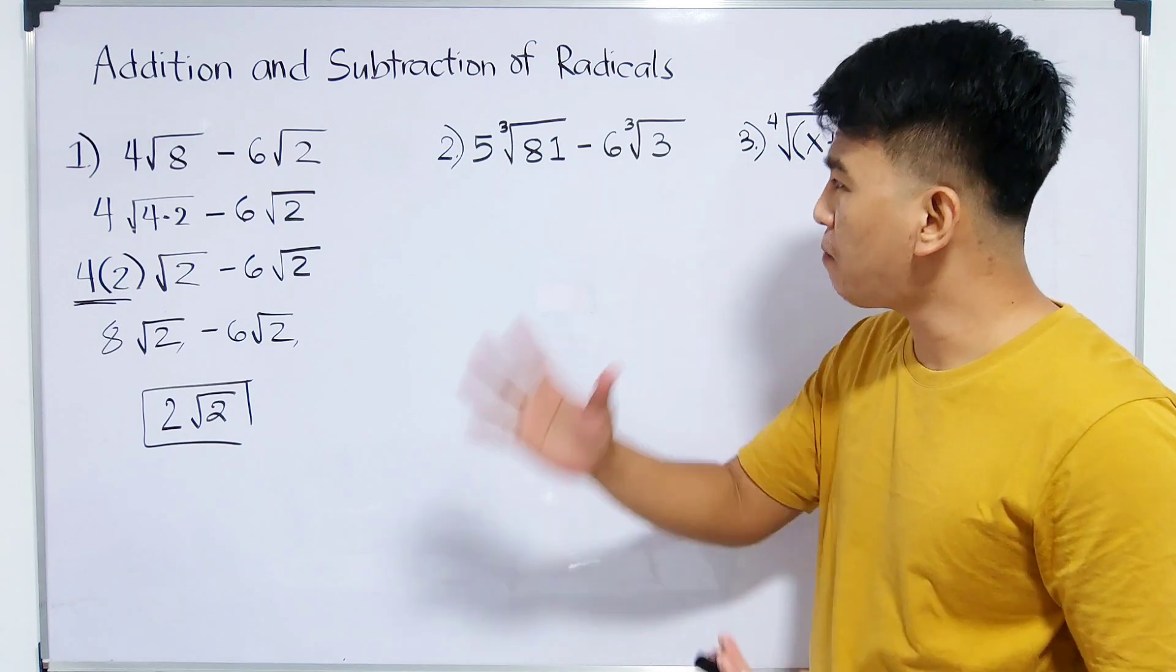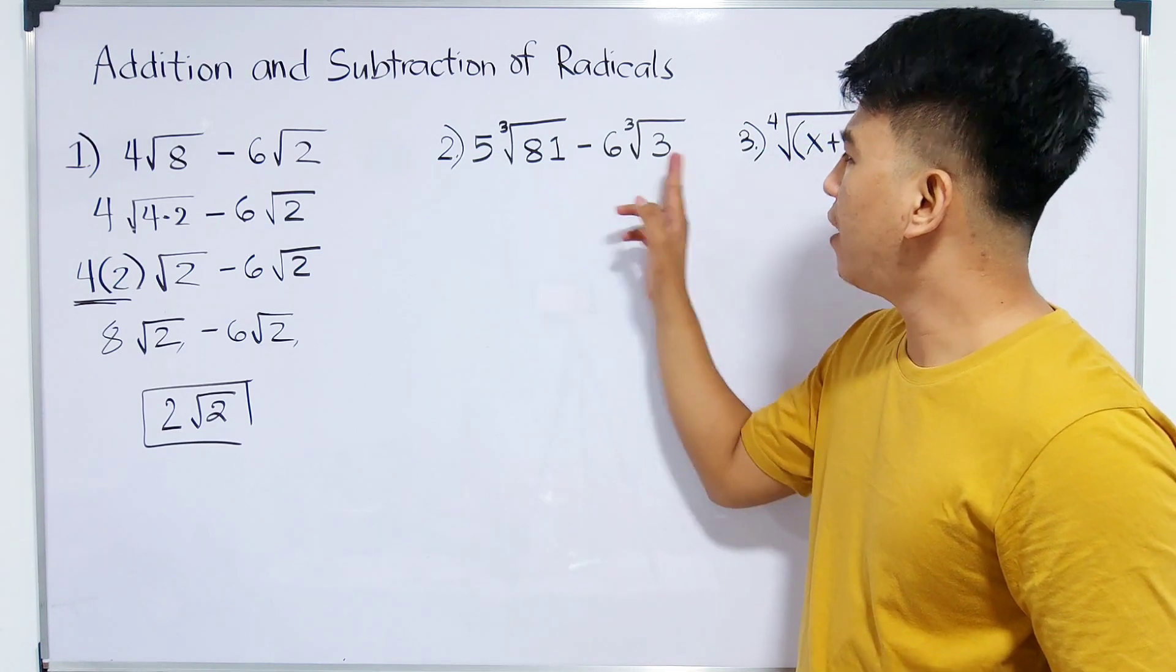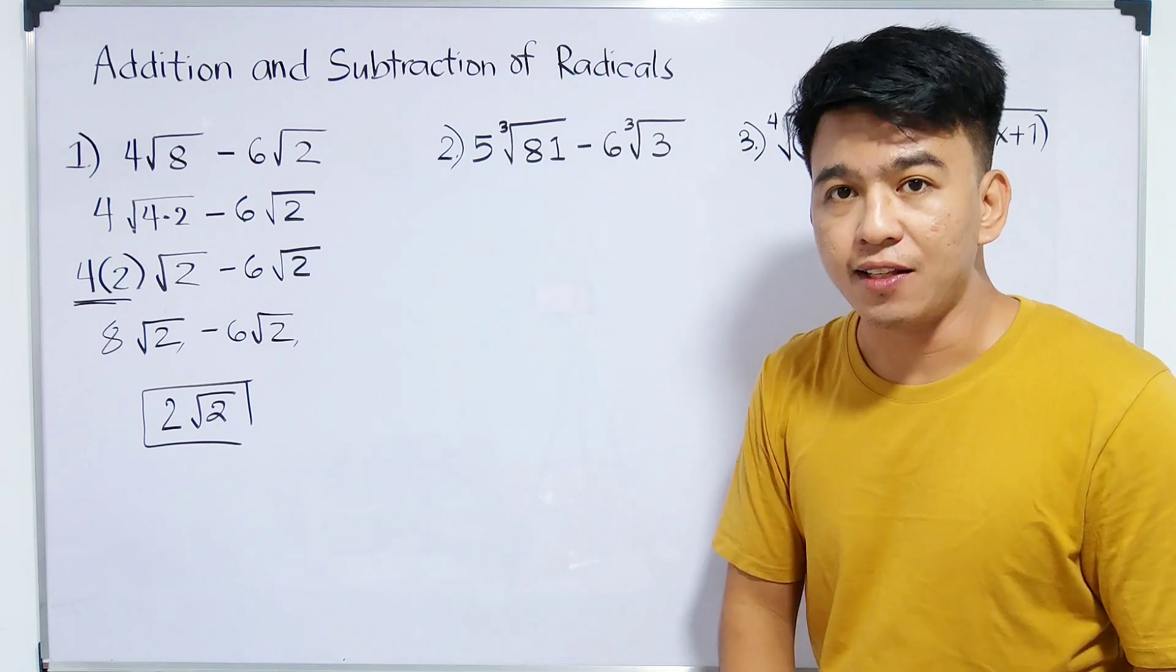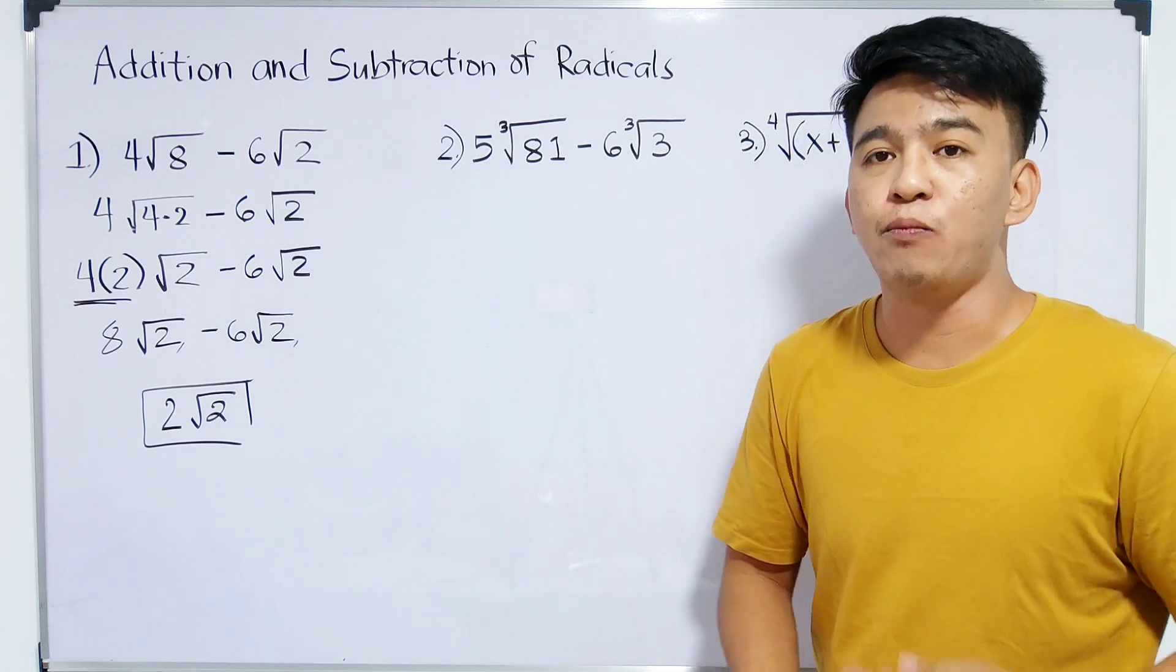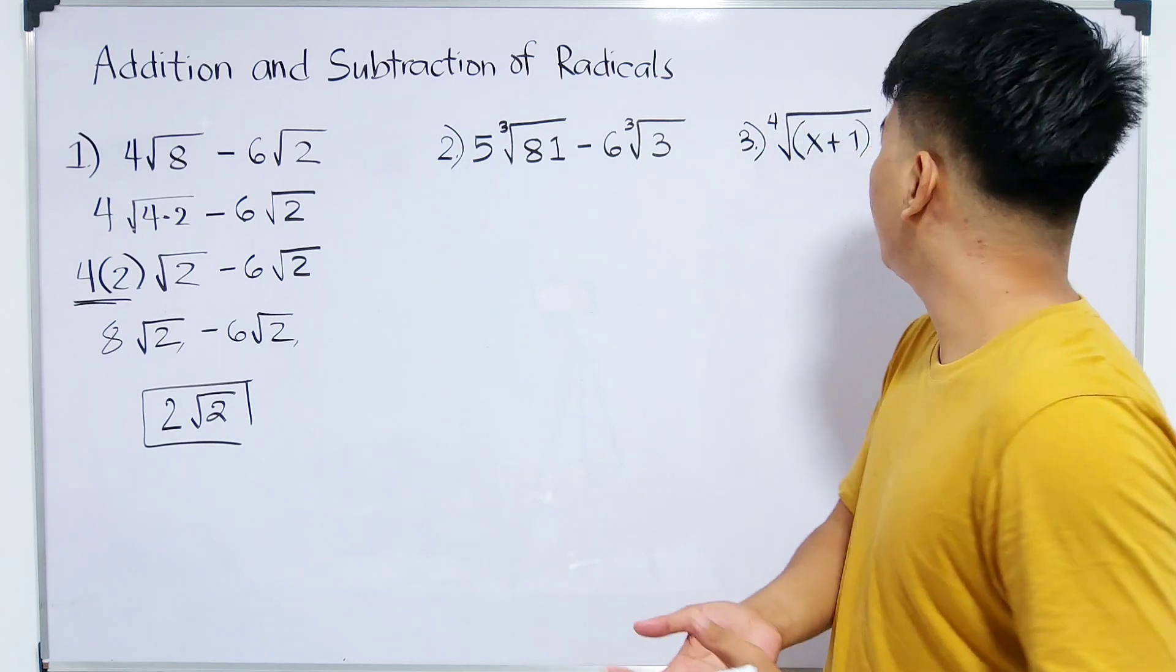And one problem here is 81 and 3 are different radicands. So we can't automatically subtract them right away.